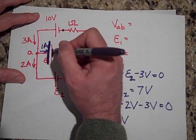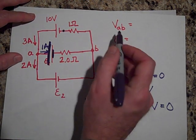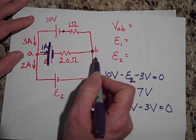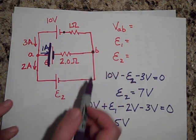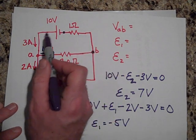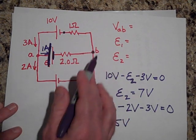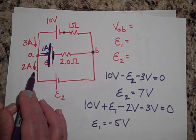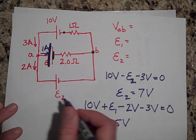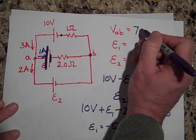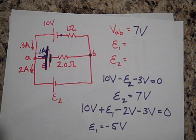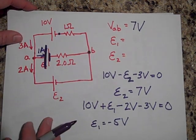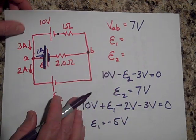Lastly they want the voltage at A with respect to B. I'll start at B and work my way to A. I can go one of three ways; the easiest is through E2 since there's only one element. Going that way I go up E2, which is 7 volts. So the voltage at A with respect to B is positive 7 volts — A is 7 volts higher, which is why current flows from high to low voltage.